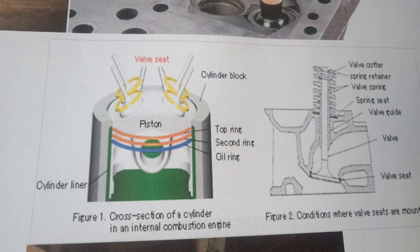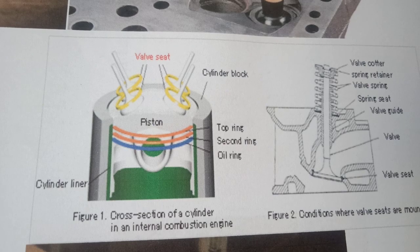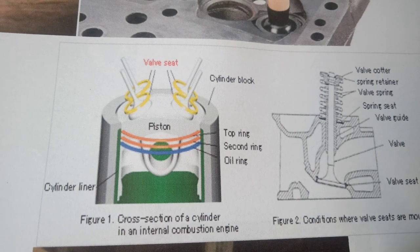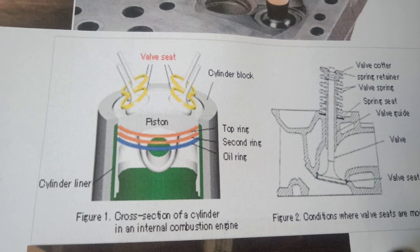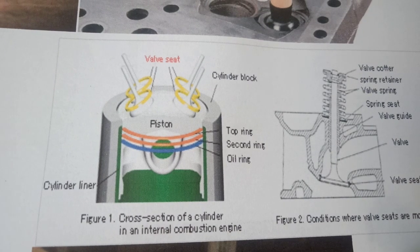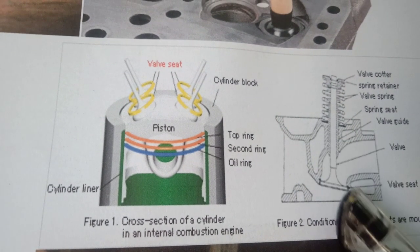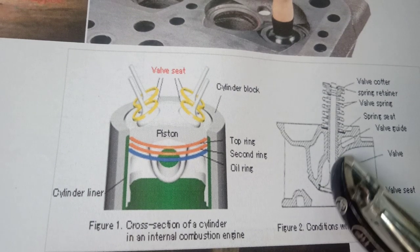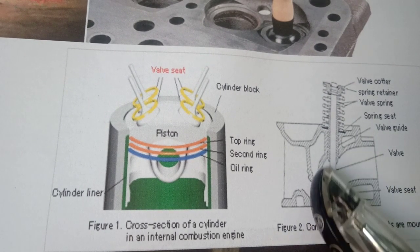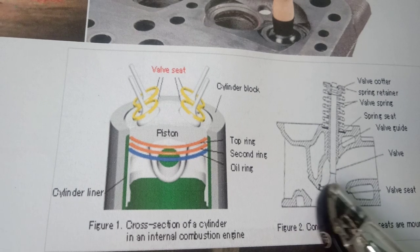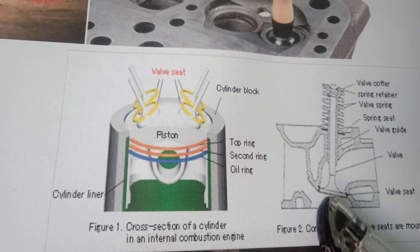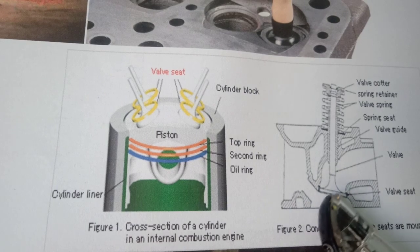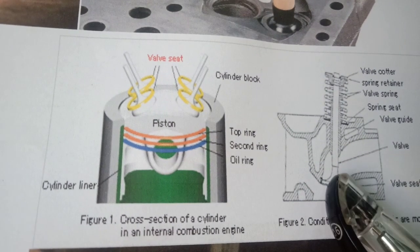Good morning friends. Today we will discuss the lapping process. In the IC engine, if the engine runs for a very prolonged interval of time — for example, 1 lakh to 2 lakh kilometers — then due to the continuous operation of the valve, that is the closing and opening of the valve, the surface of the valves gets deteriorated and there is a leakage of compression. The valve is unable to hold the compression inside the engine cylinder due to the wear and tear.